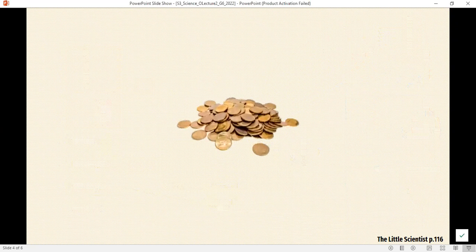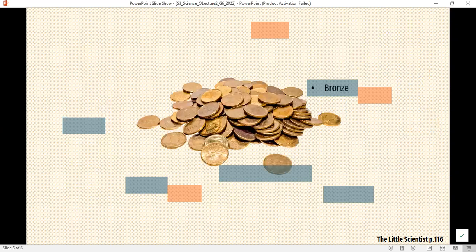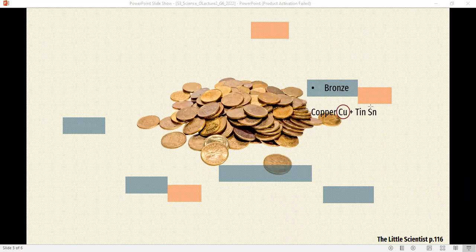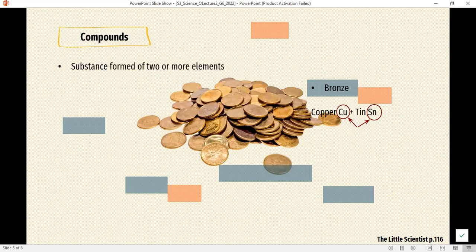Let's take those coins. Those coins are actually made of bronze. The bronze is not a pure element or a pure substance. How do we make bronze? We mix copper with tin. The copper is an element with symbol Cu. The tin is another element with symbol Sn. When you mix copper with tin, you get bronze. The symbol for bronze is CuSn. As you see, compounds are substances formed of two or more elements.